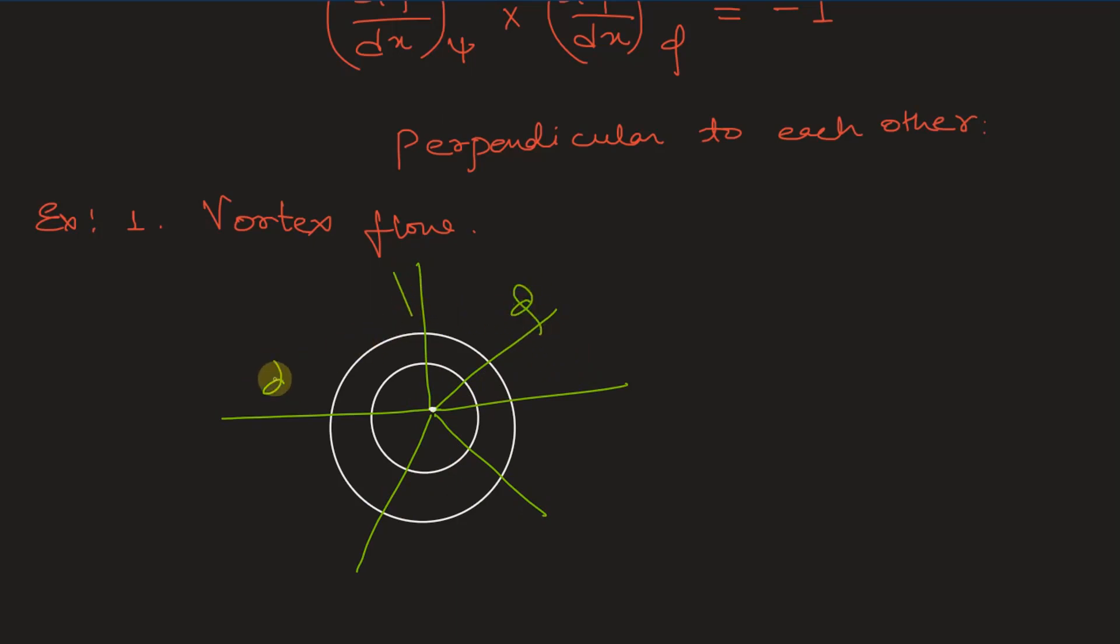The green lines are equipotential lines where phi equals constant. The white lines represent the streamlines of vortex flow. The green lines represent the potential lines where phi is constant, or phi equals zero.